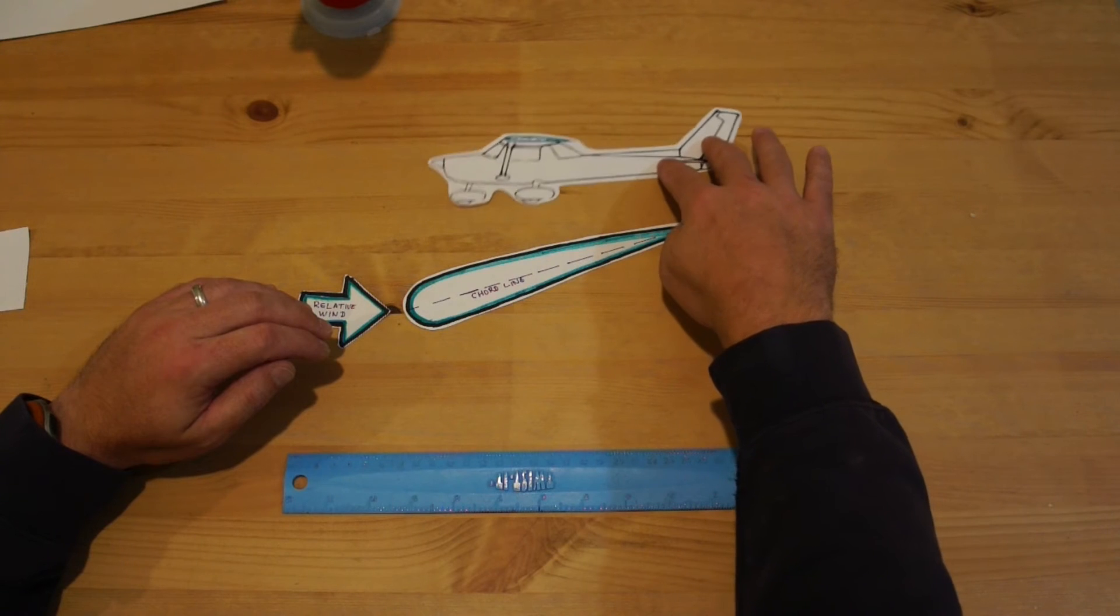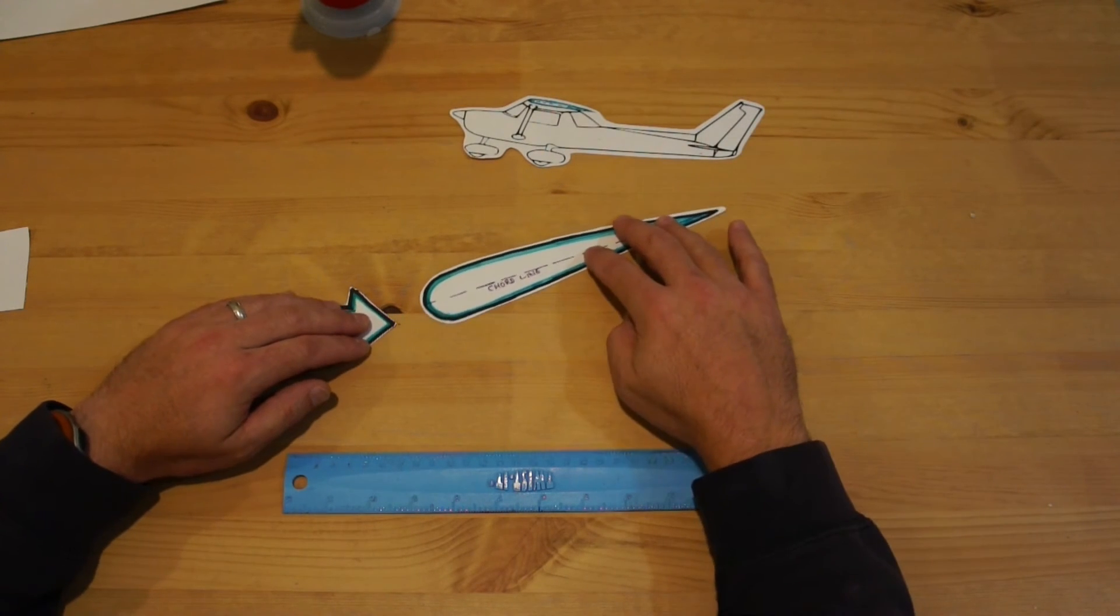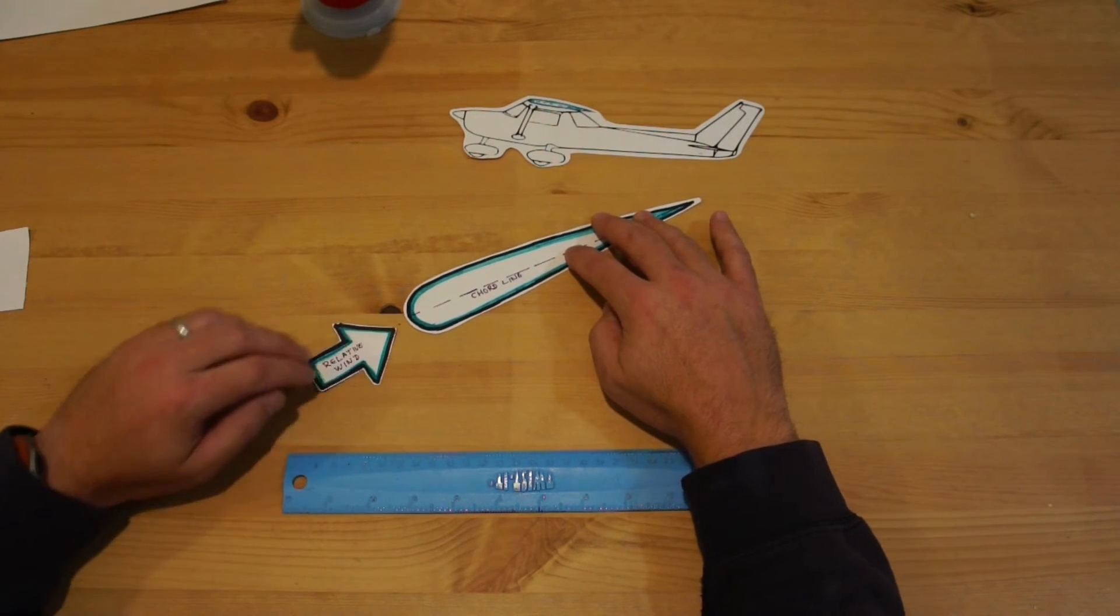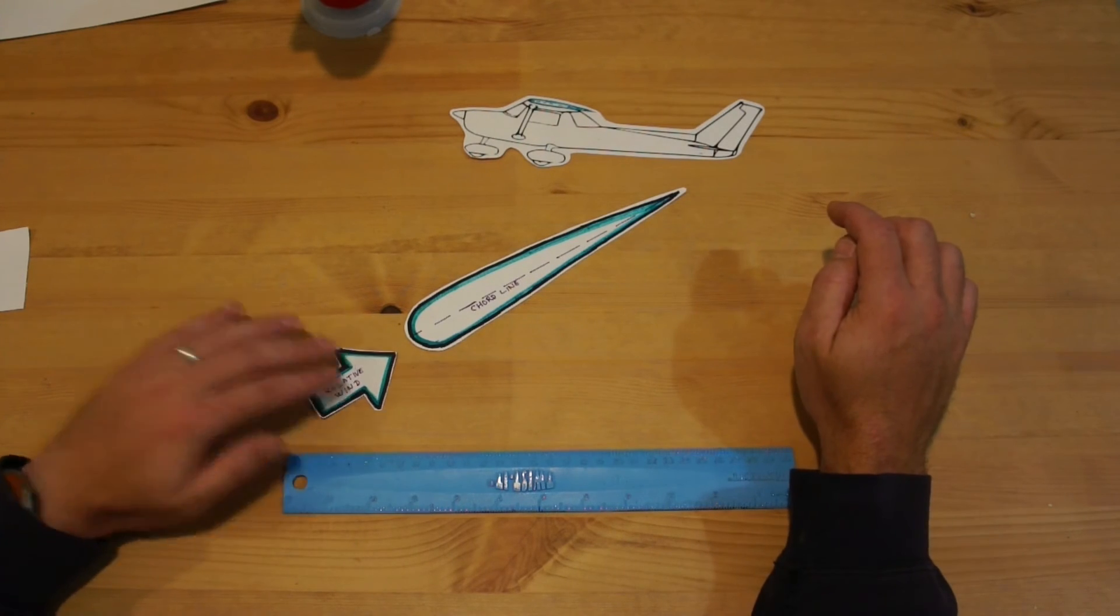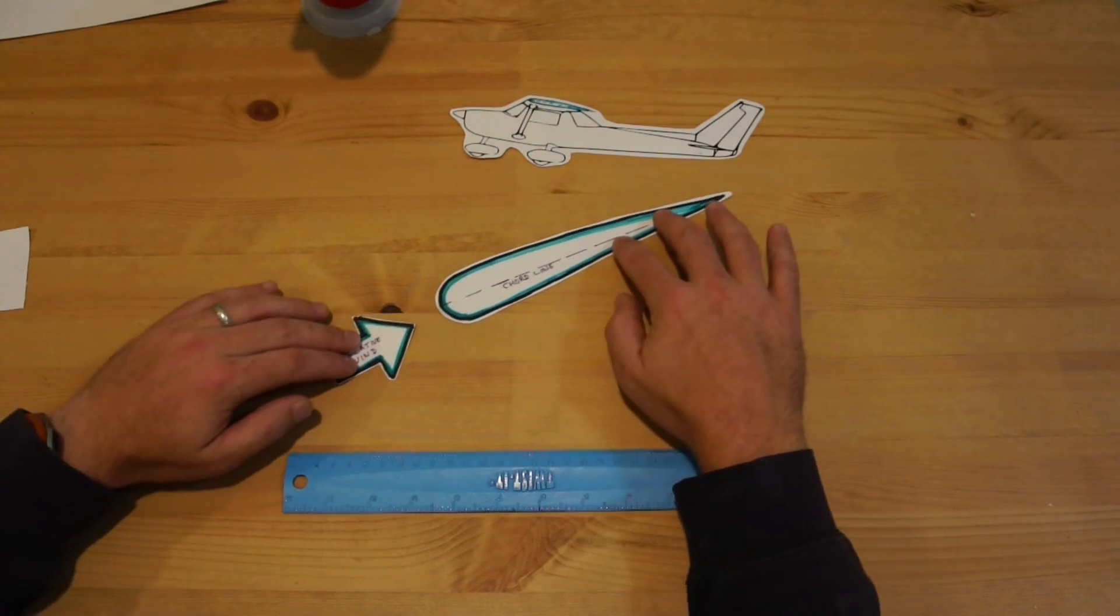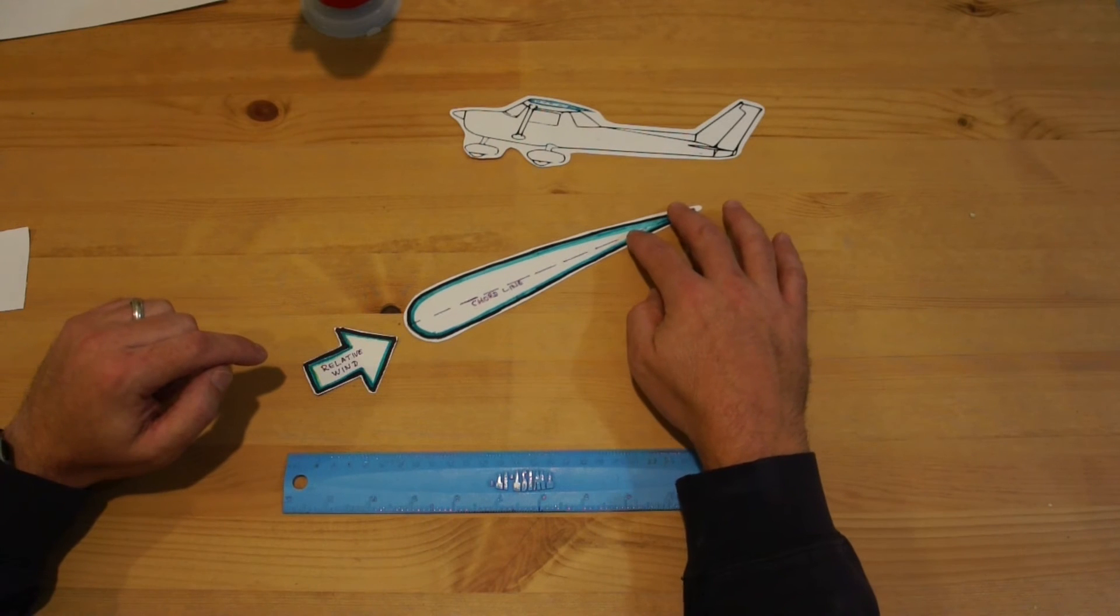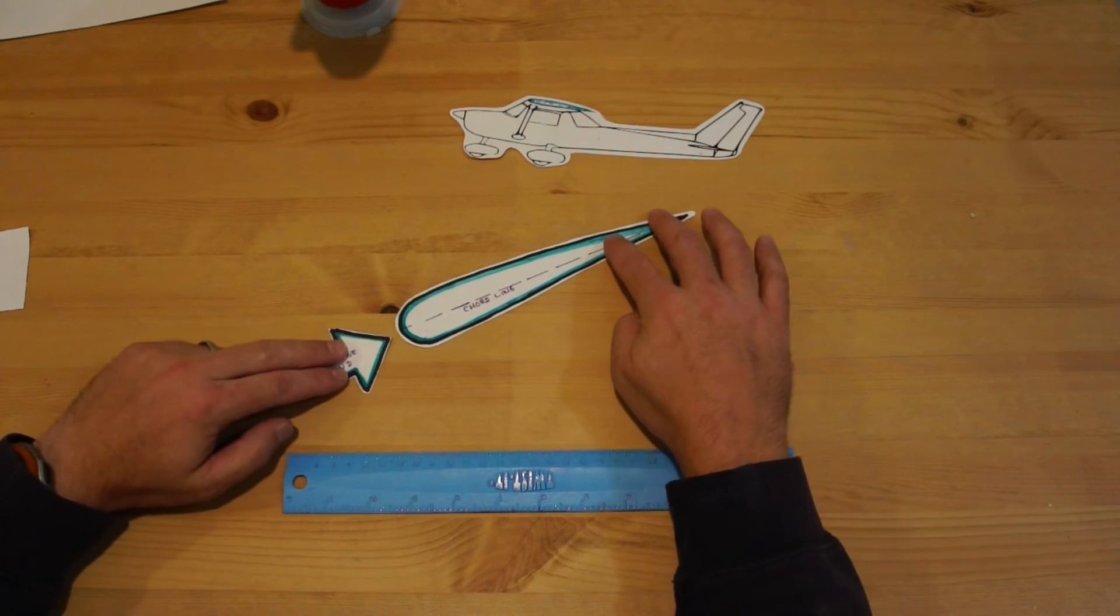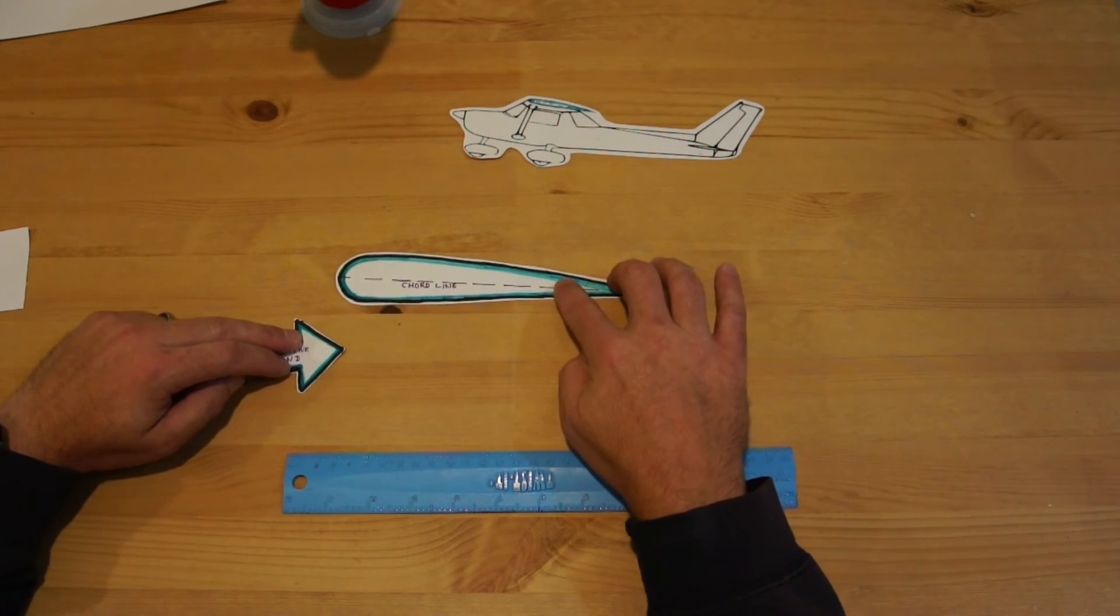It begins to fall and as it does, the relative wind points back into the face of the aircraft as it's moving forward. As that happens, your aircraft again begins to create lift and then you can recover from that stall.